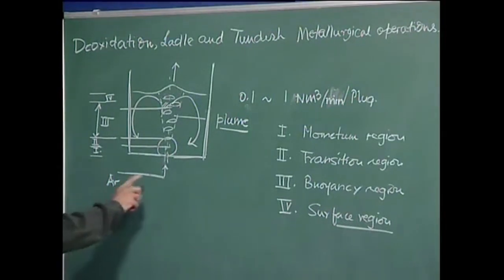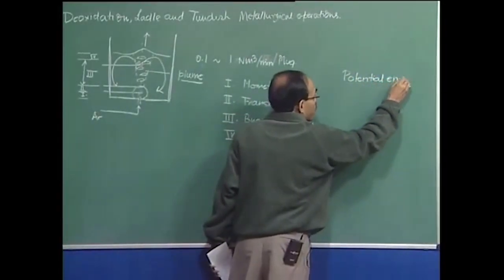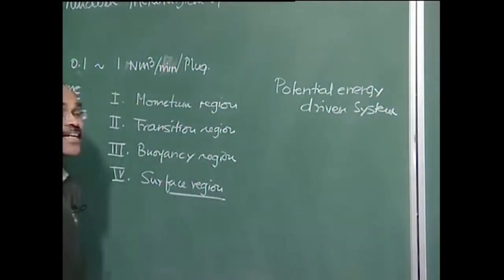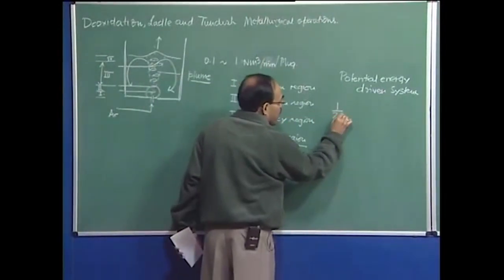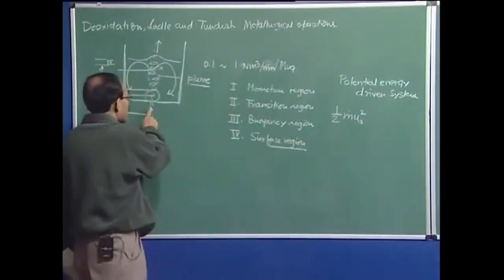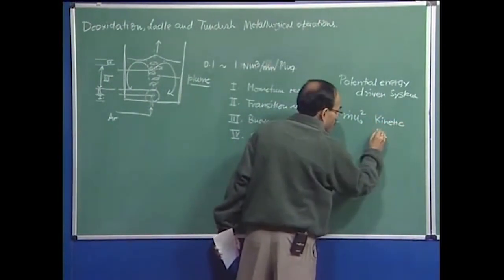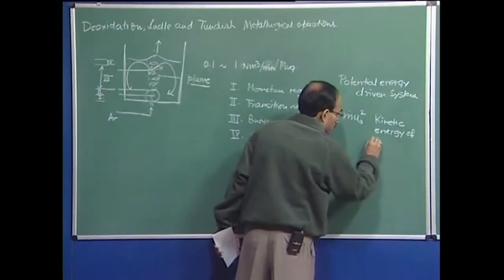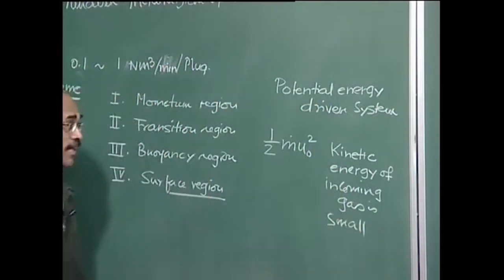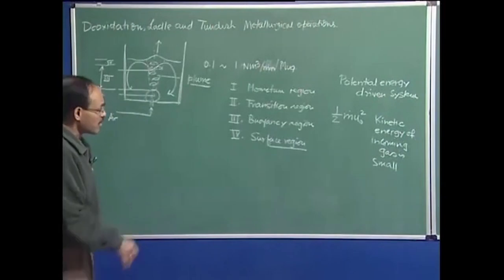The system is typically driven by potential energy and not kinetic energy as one would normally anticipate — it is a potential energy driven system. The kinetic energy of the injected gas, which is (1/2) × ṁ × u₀², where ṁ is the mass flow rate and u₀ is the free stream velocity through the orifice, is extremely small — barely 1 to 2 percent of the potential energy. That is why we say it is a buoyancy driven flow in a gas-stirred ladle system, not kinetic energy driven.